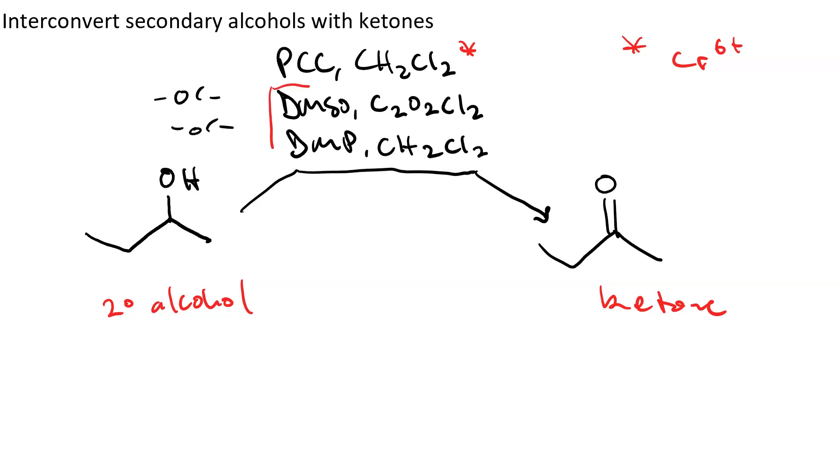And I would say that these two are preferable because they do not make chromium 6. So the Swern oxidation or the Dess-Martin periodinane are greener options.